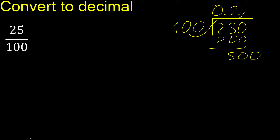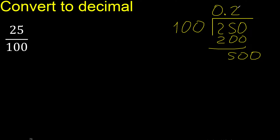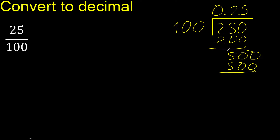100 multiplied by which number is nearest to 500 — multiplied by 5 is 500. Subtract is 0, therefore finish.